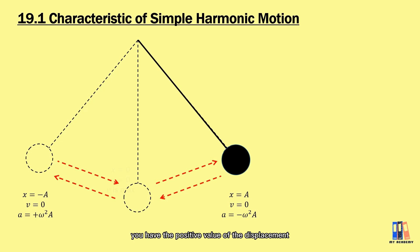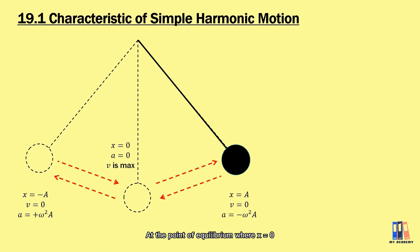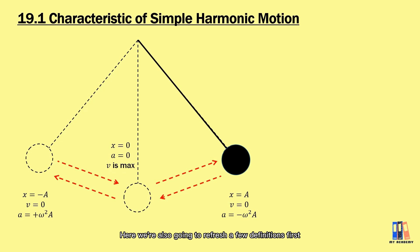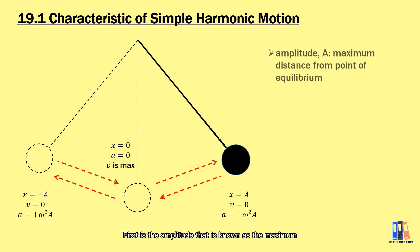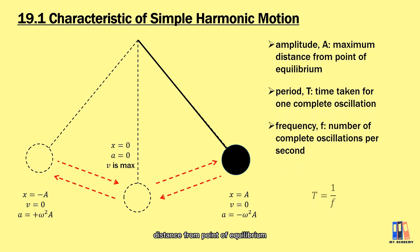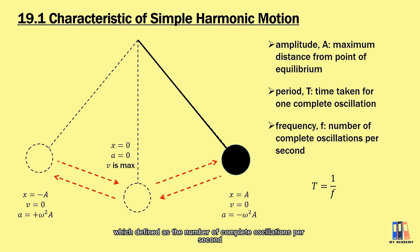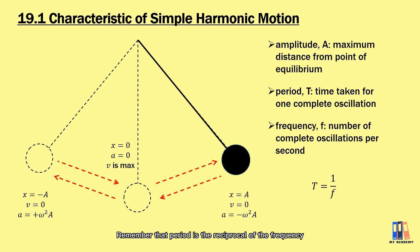If the object is on the right, it has positive displacement and negative acceleration and resultant force. At the point of equilibrium where x equals zero, the object has zero acceleration and the velocity is maximum. Let's also refresh a few definitions. Amplitude is the maximum distance from the point of equilibrium. Period is the time taken for one complete oscillation. Frequency is the number of complete oscillations per second. Remember that period is the reciprocal of frequency, which you may need in calculations later on.